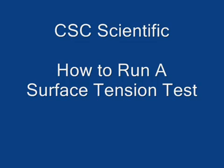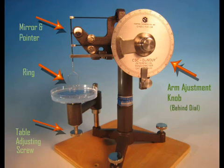This is a description of how to do a surface tension test using the CSC scientific tensiometer. The test results are read directly on the round dial on the front of the tensiometer.